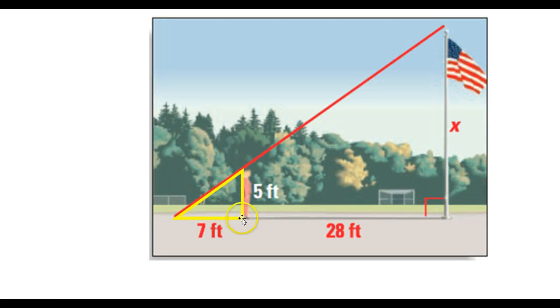Hopefully you can see that Julia and her shadow form a small triangle here, and then of course we've got the large triangle formed by the flagpole and its shadow. So we can use similar triangles to solve this and proportionality, but I need you to be very careful to avoid a common mistake.